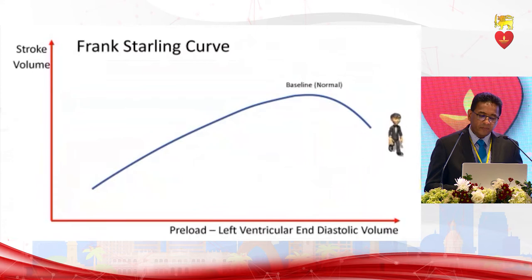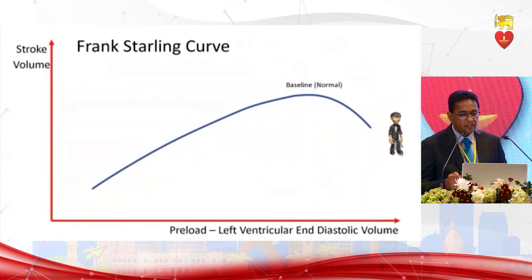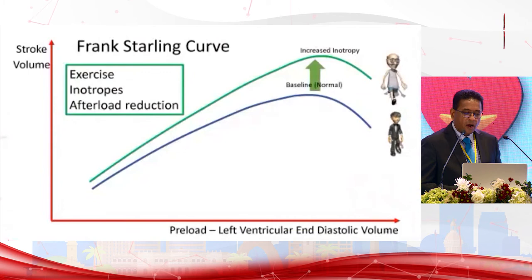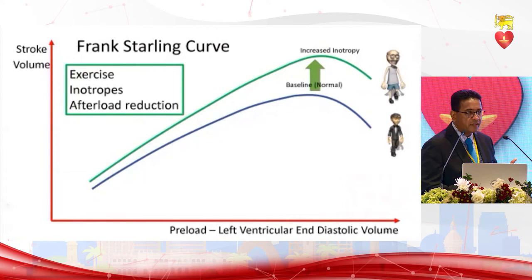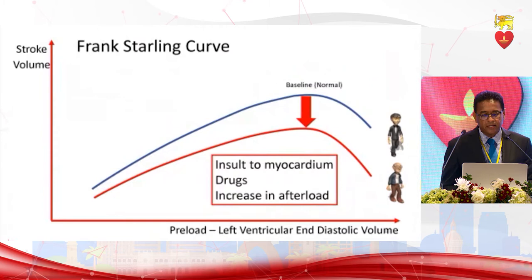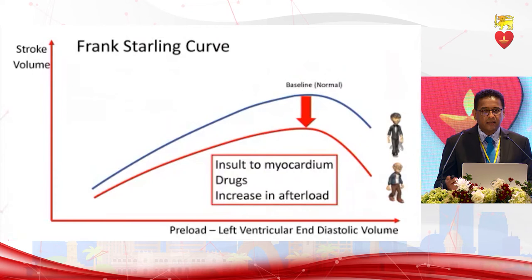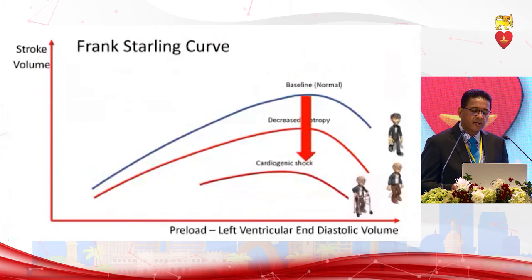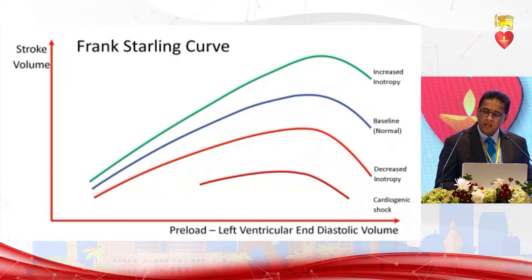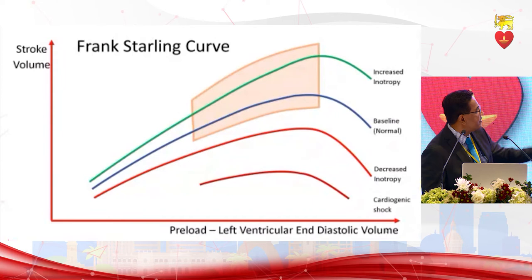There is not only one Frank-Starling curve. The heart can be in a stimulated or depressed state, or the myocardium can be damaged. Stimulation occurs with exercise, inotropes, or afterload reduction — giving greater stroke volume for the same end-diastolic volume. Depression occurs with myocarditis, drugs, myocardial infarction, or increased afterload. In cardiogenic shock there is minimal response to fluids. The goal is to manage the patient in the optimal area of the Frank-Starling curve.